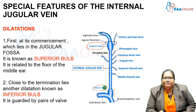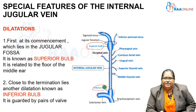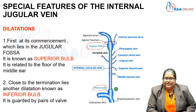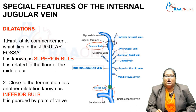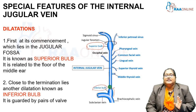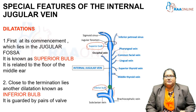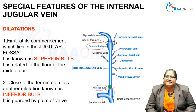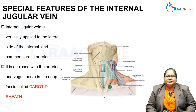The inferior bulb is located close to the termination of the internal jugular vein and is guarded by valves. So in total, the internal jugular vein has two dilatations — the superior bulb and the inferior bulb — and this is one of its special features.